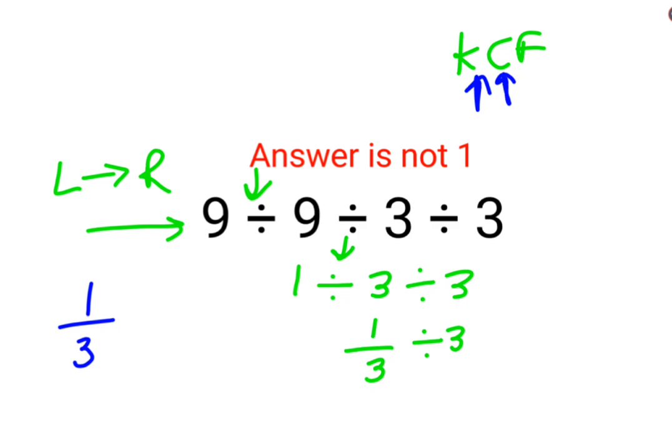C stands for changing the division sign to multiplication. F stands for flipping or taking the reciprocal of 3, which is 1 upon 3. So the answer for this question is supposed to be 1 upon 9.